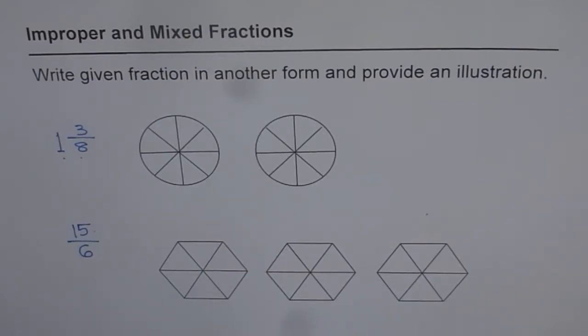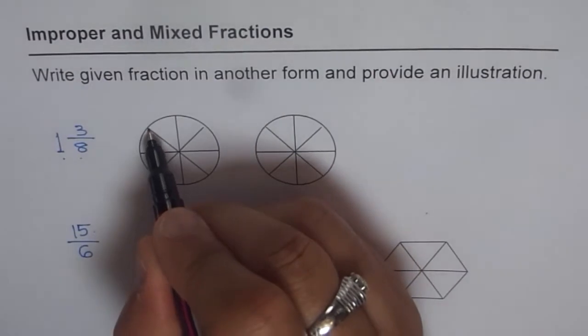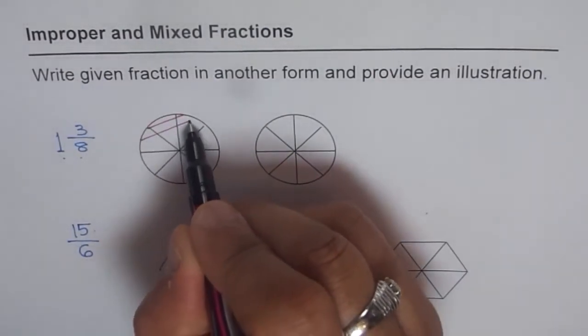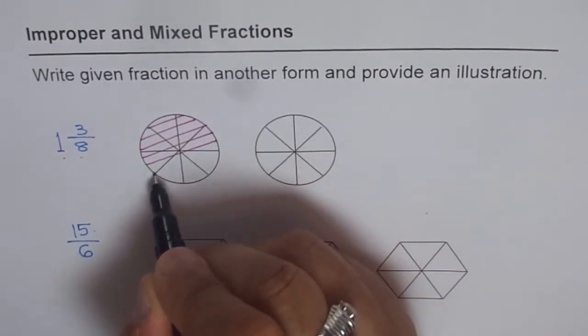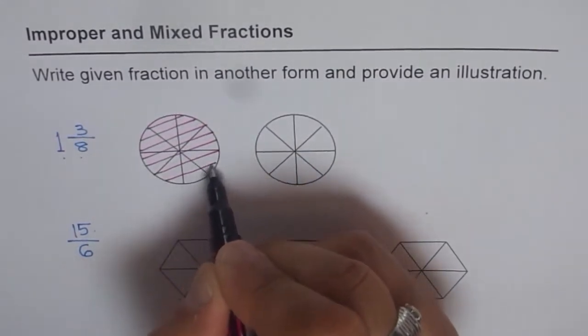Here are my suggestions. So the first one says, 1 whole and 3 out of 8. So let's shade first. Let's say we are shading 1 whole, which is this one. So let's shade it with one color. So that is 1 whole.